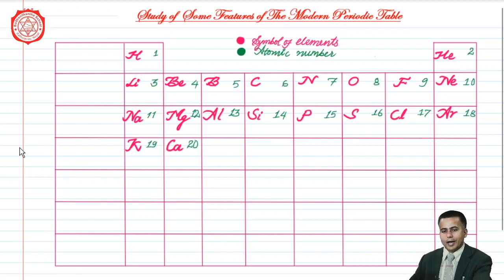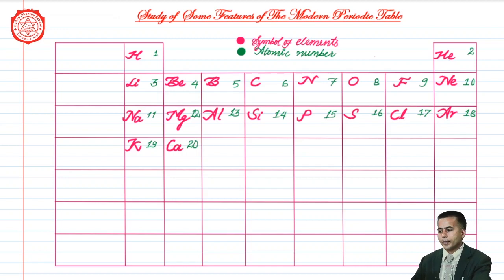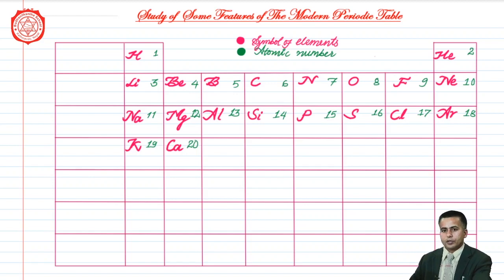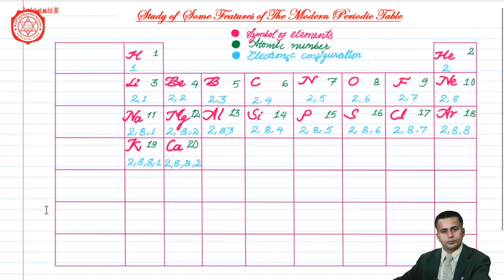You can see the atomic number being written in green color, while the symbol of elements is shown in deep pink color as before. Now I would like to add the electronic configuration of all these elements in different cells — let's have a look at it.